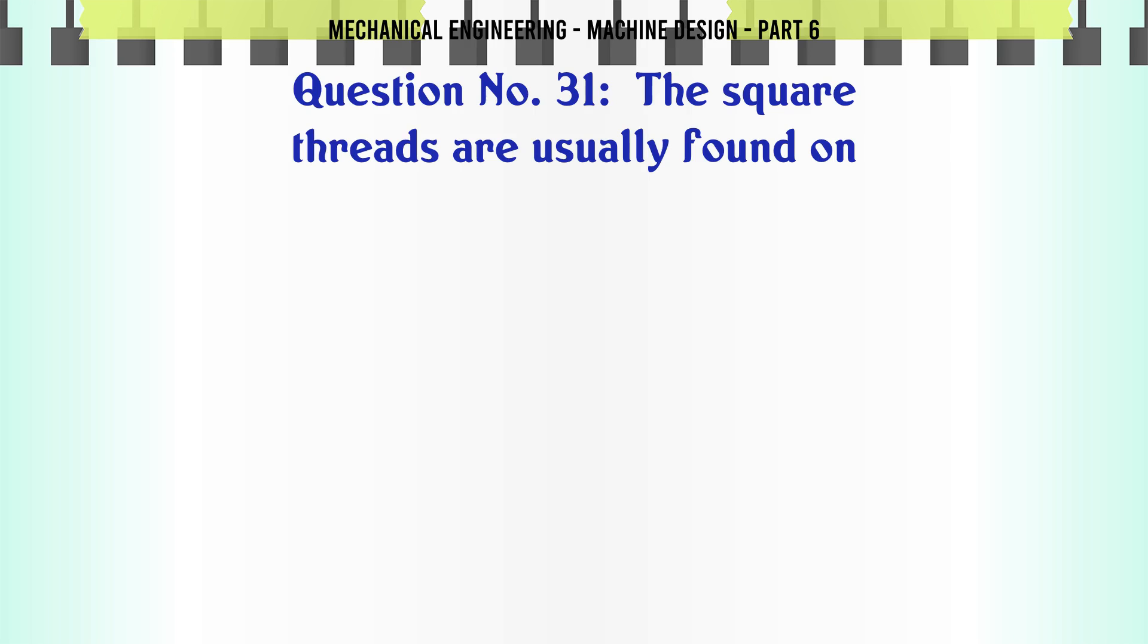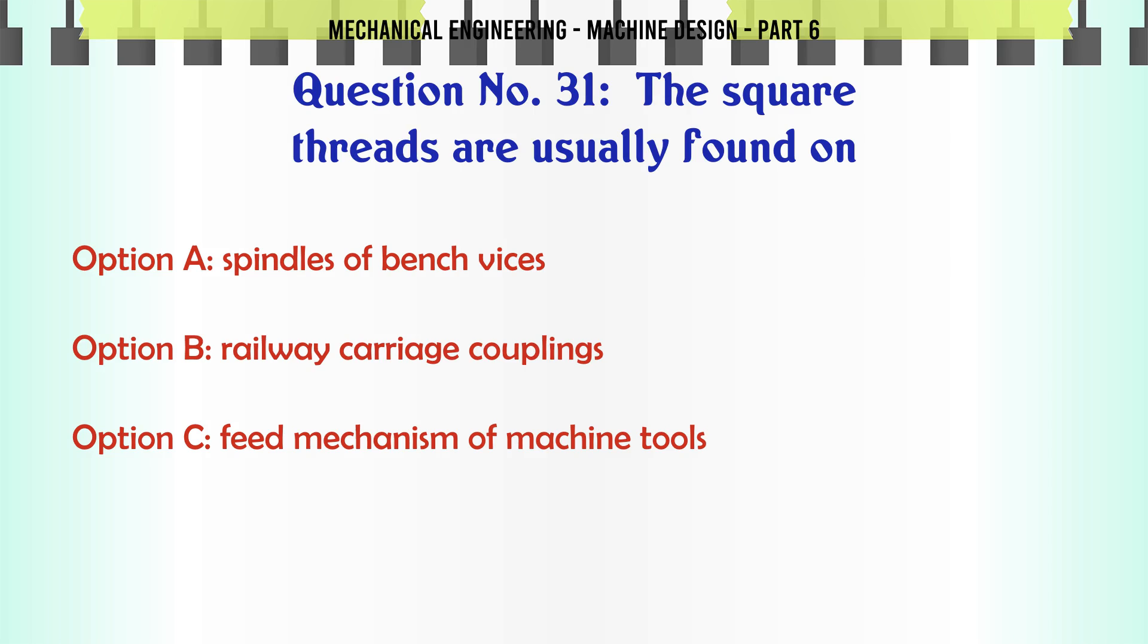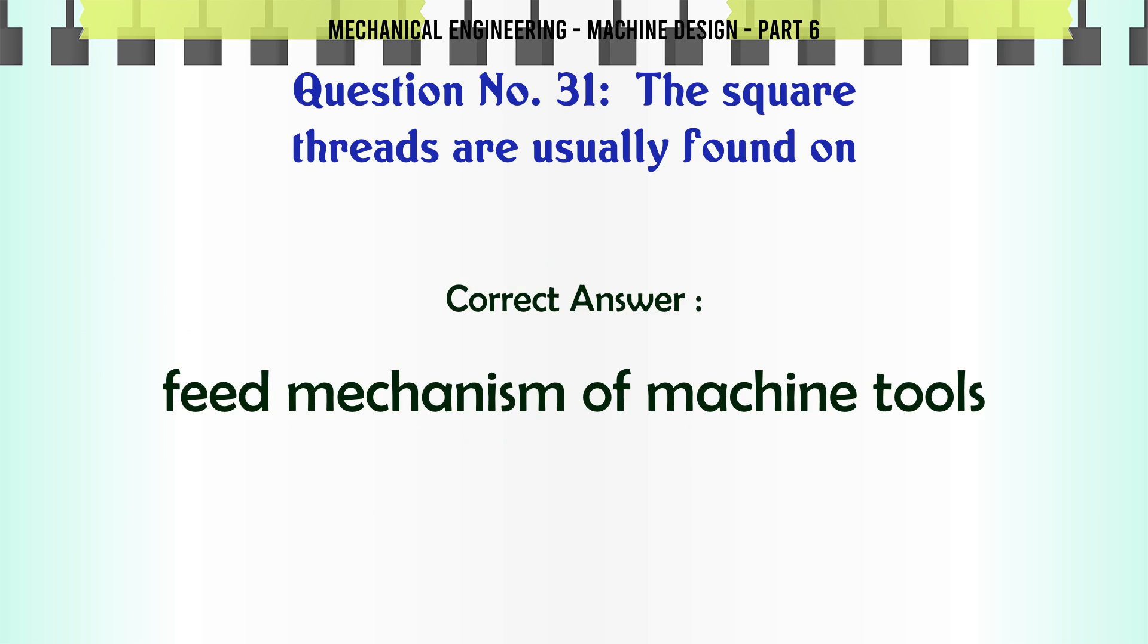The square threads are usually found on: A) spindles of bench vices, B) railway carriage couplings, C) feed mechanism of machine tools, D) screw cutting lathes. The correct answer is feed mechanism of machine tools.